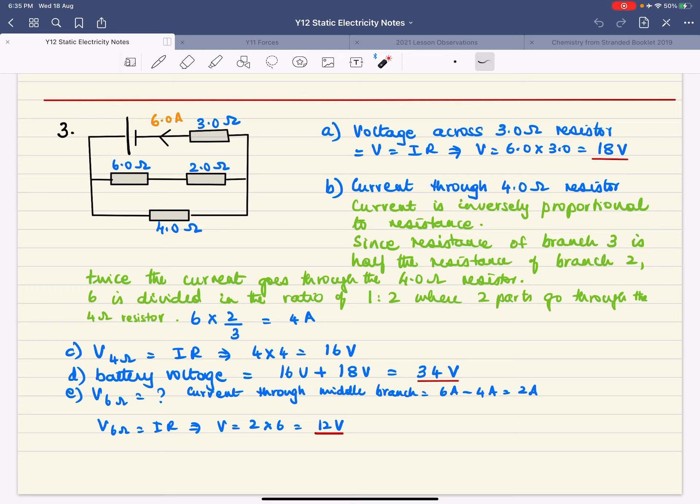And then the next question is what is the current through the 4 ohm resistor? Now we know the total current but we don't know what's the current through here. Now the thing is current divides in the inverse proportion or inverse ratio of resistances so the total resistance of this middle branch is 6 plus 2 which is 8 ohms and the resistance of this is only 4 ohms.